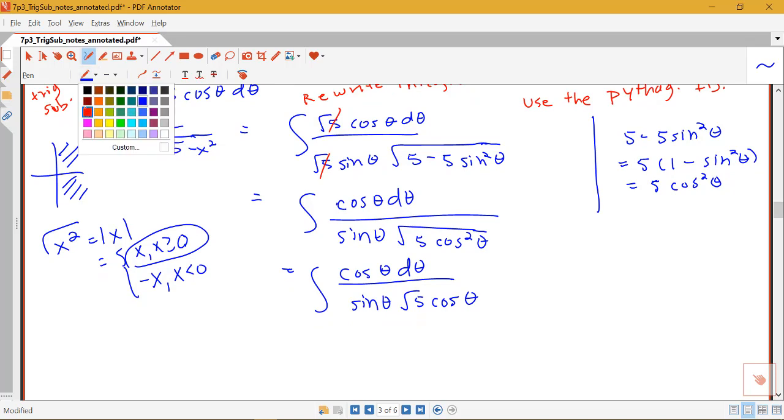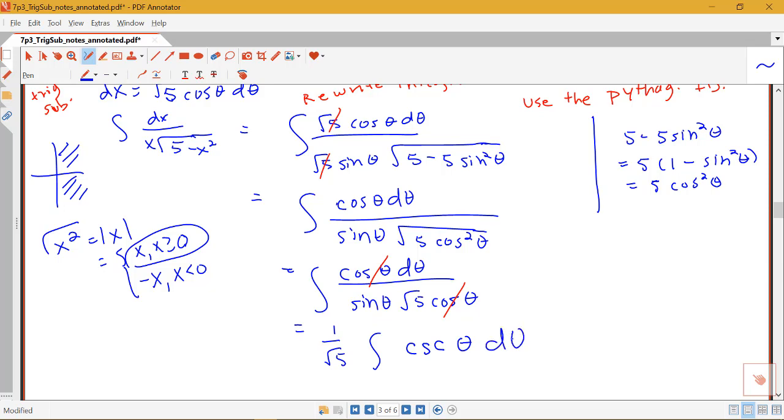We see that we have a cosine theta and a cosine theta. So those cancel. I can pull that constant of 1 over root 5 out in front, and then I'm going to have this integral of 1 over sine. Well, notice that 1 over sine is the trig function cosecant theta.